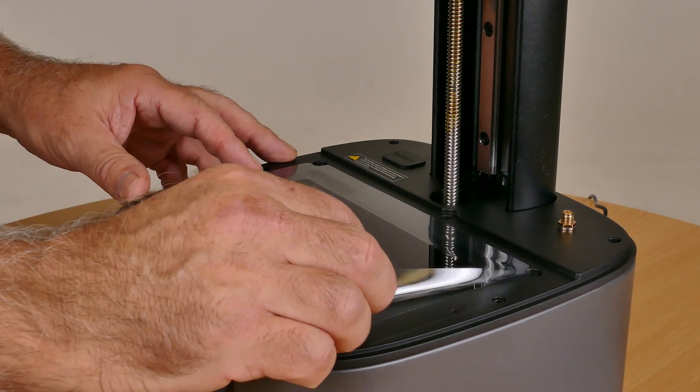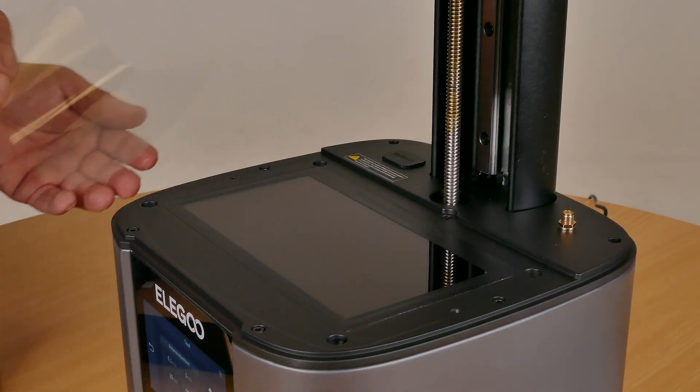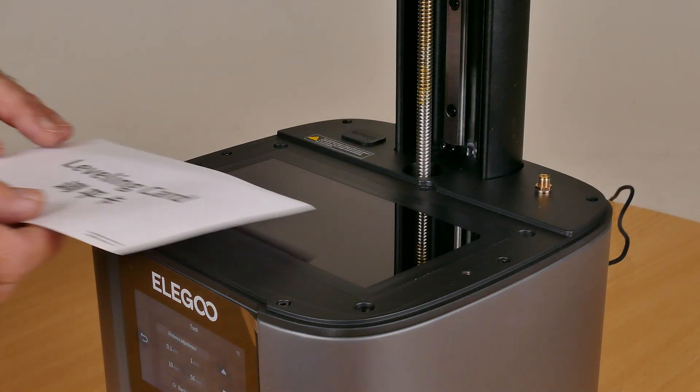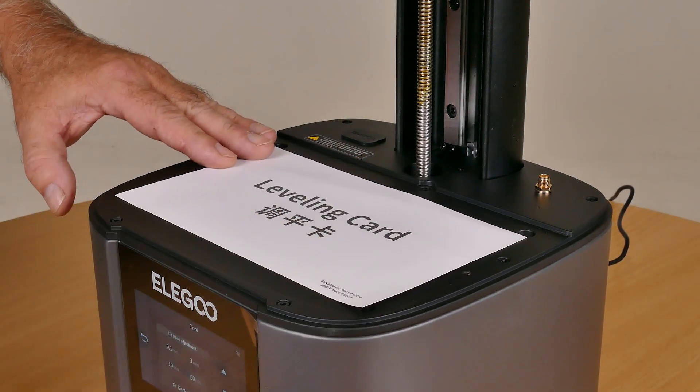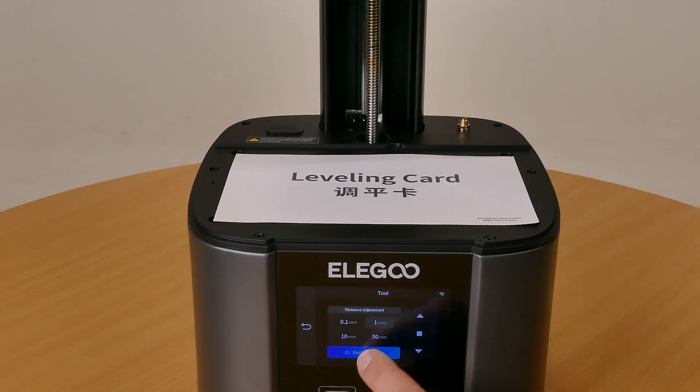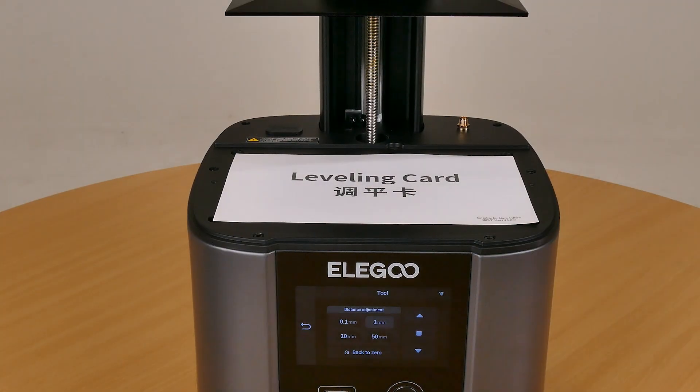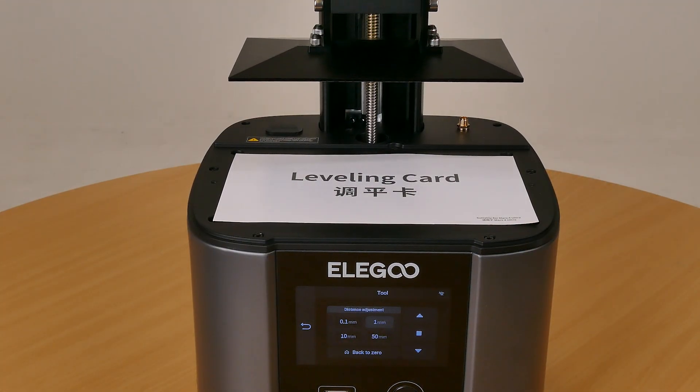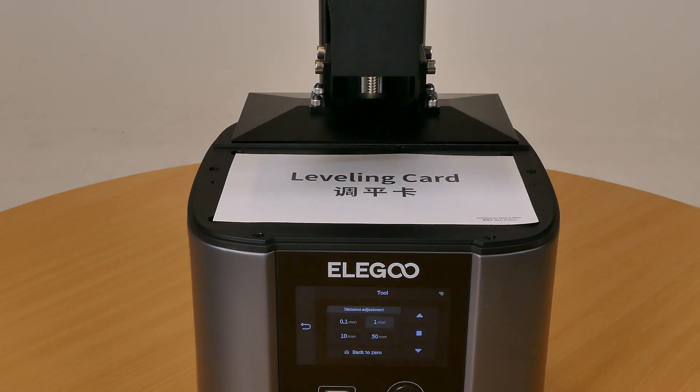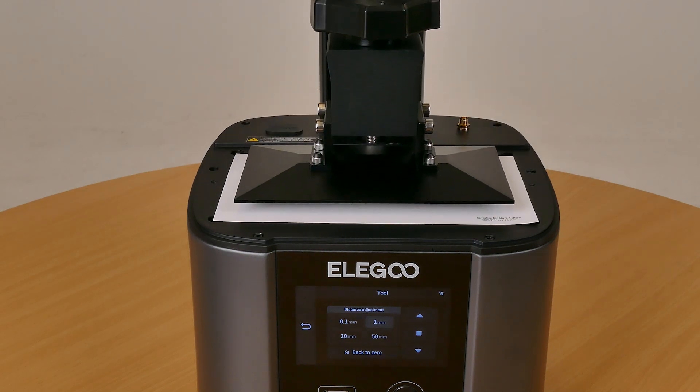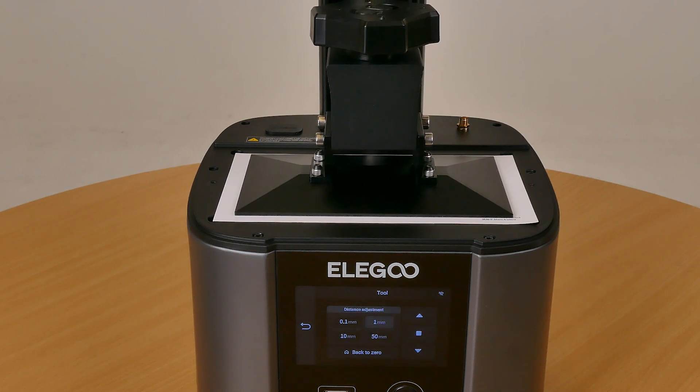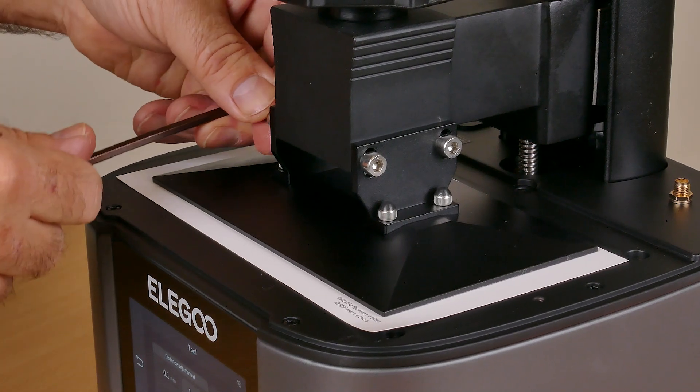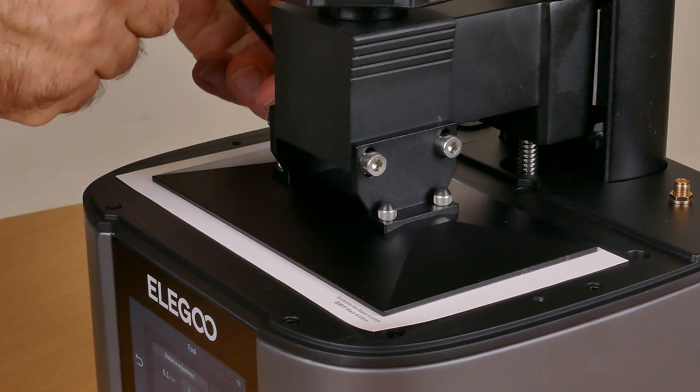Again, protective film - don't forget to take that off the screen. You can use the leveling card or a piece of paper that's been folded in half. Then bring down the build plate back to zero. Once it reaches the level of the screen it will slowly bounce and work out where the position is. As soon as it stops you can then tighten the bolts.